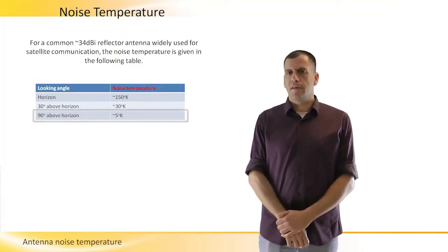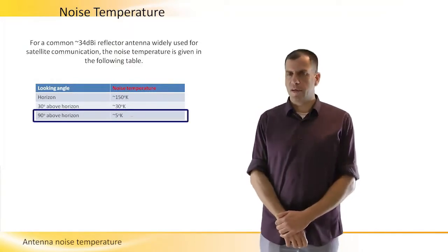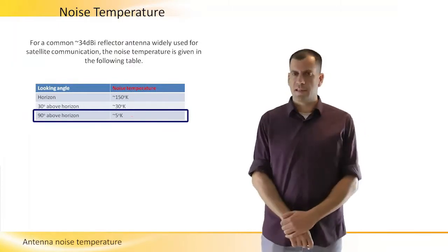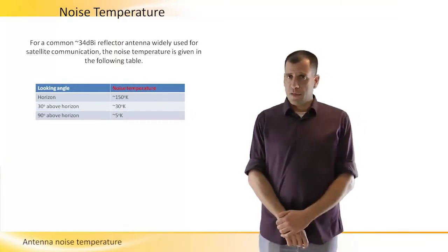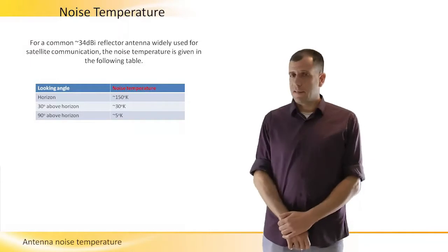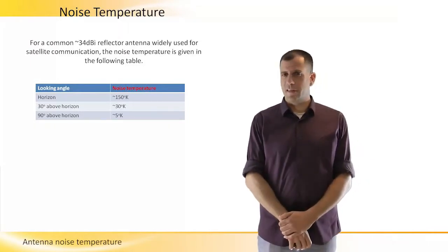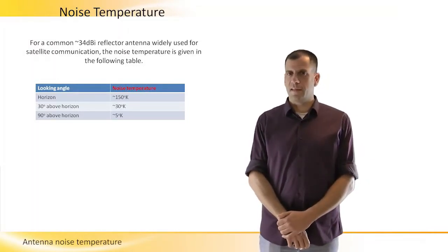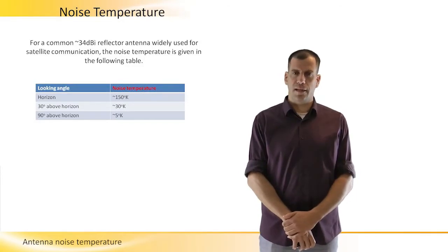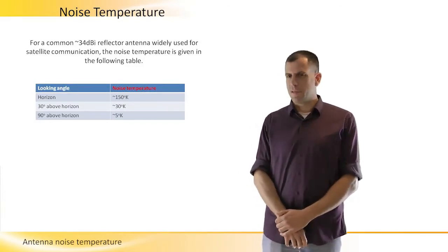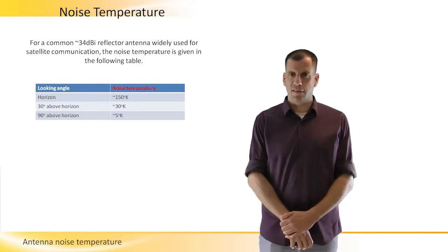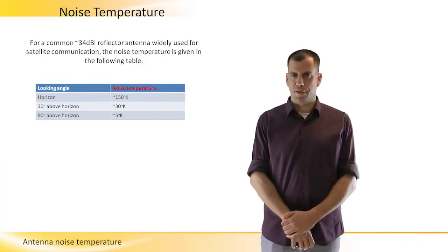And 90 degrees above horizon, this is approximately 5 degrees Kelvin. If you calculate the 5 degrees Kelvin in the noise formula that we have seen in the previous slide, then you will get much lower energy than minus 174 dBm per hertz.